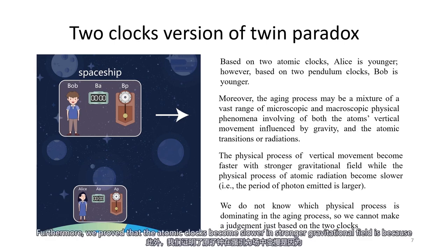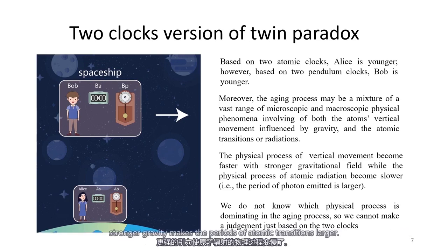For example, when I wave my arm back and forth and the frequency of the wave slows down, is it because time has slowed down? Isn't it because the strength of my arm is weakened? Also, when I am jogging and the speed of jogging slows down, is it because time has slowed down? Isn't it because the strength of my legs is weakened? Furthermore, we can show that atomic clocks become slower in a stronger gravitational field because stronger gravity makes the periods of atomic transitions larger.